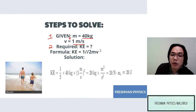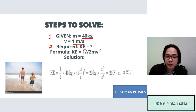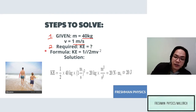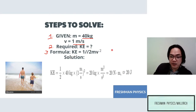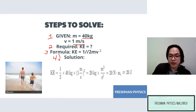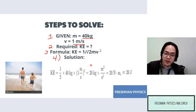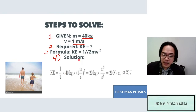Step two: write down the required quantity, which is kinetic energy — kinetic energy equals question mark because it is missing. Step three: write down the formula, which is KE = ½mv². Step four: show the process by plugging in the numbers — kinetic energy equals one-half times 40 (the mass) times 1 squared (the velocity).